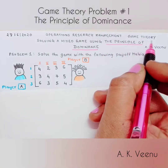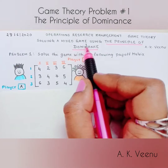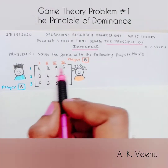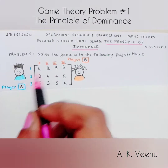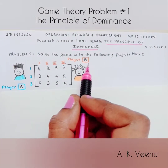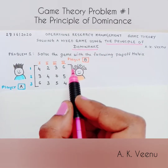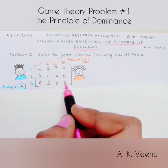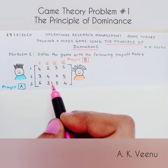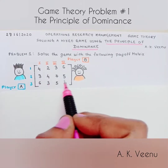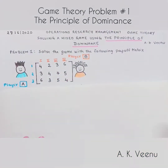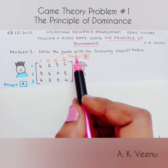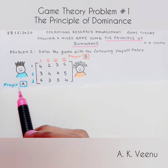Welcome to the game theory. Today we are going to solve a mixed game using the principle of dominance. Here we have a 3 by 4 payoff matrix of player A and player B. The principle of dominance is based on the phenomenon that in a mixed game, certain columns dominate over other columns and certain rows dominate over other rows. The idea is to minimize the losses of player B and maximize the gains of player A.